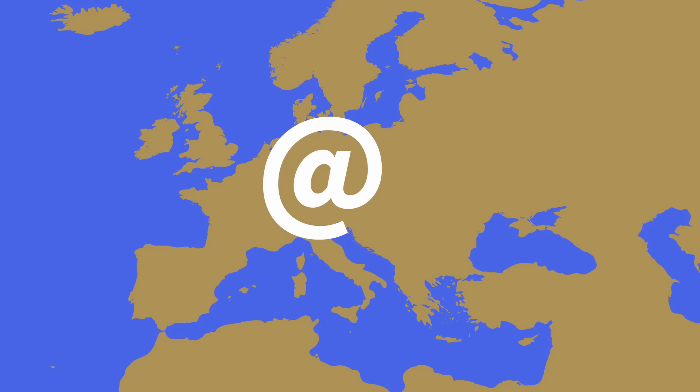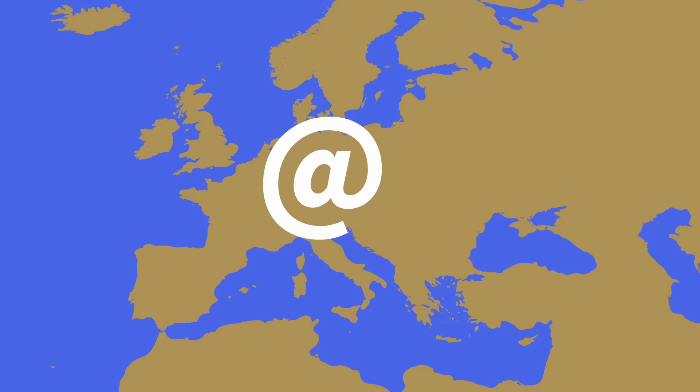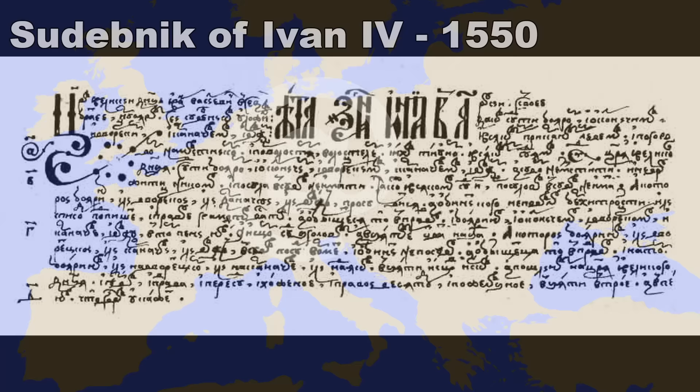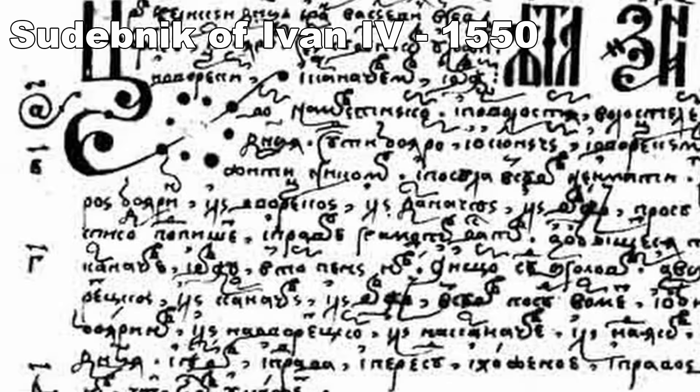The stylized A also held different meanings throughout Europe. In 1550, the Sudebnik of Ivan IV, a collection of laws laid out by the Russian monarch, uses at to signify point one. In Italy and Germany, at was used to represent verses in court cases, but these other meanings never found their way into English.